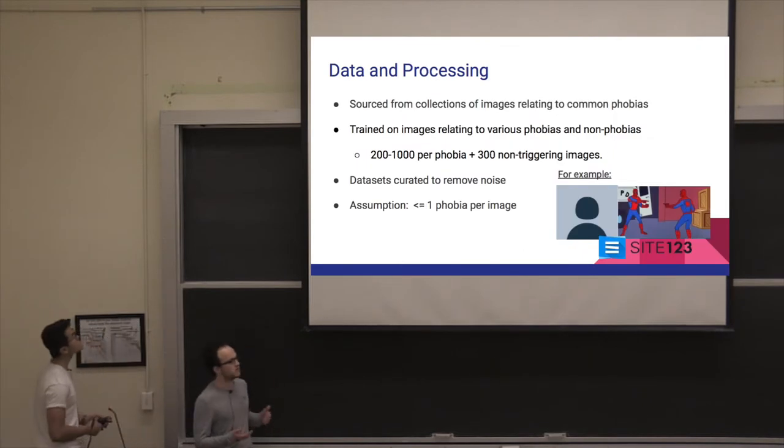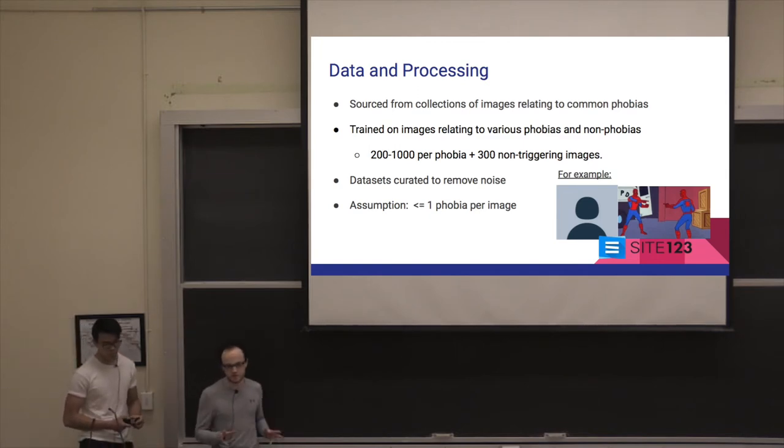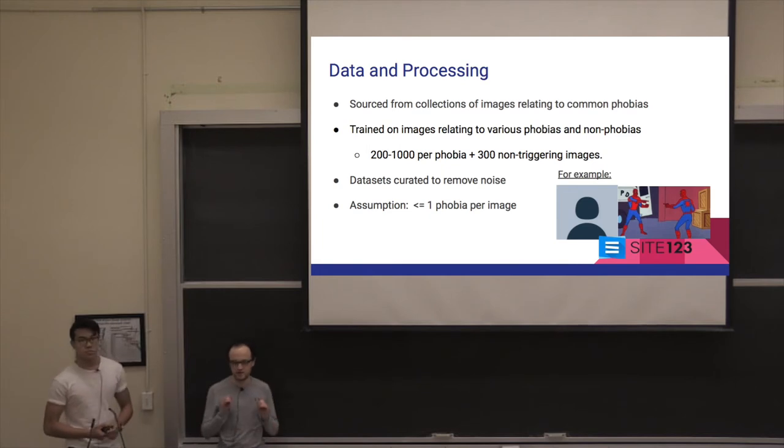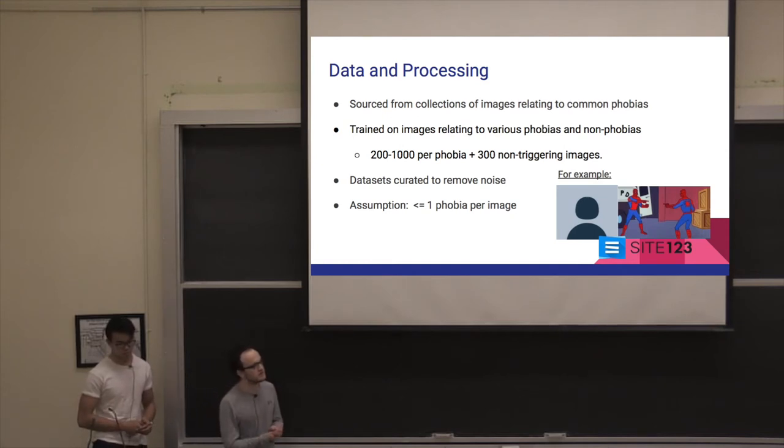Our data is sourced from online collections of images relating to common phobias. We've got between 200 and 1,000 images per phobia, as well as about 300 images that we don't think will trigger any common phobias. Datasets have to be curated to remove noise that ends up in it.